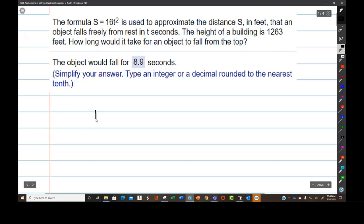So here's the building. There's you dropping a ball, not throwing it, but just dropping it off the edge of the building. The building is 1,263 feet, and that's the distance. What we're trying to find is the time.